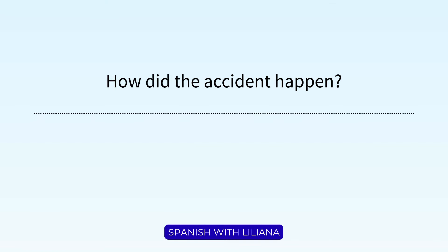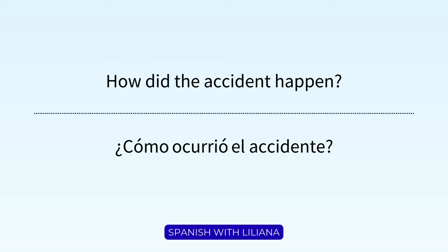How would we ask 'how did the accident happen?' 'How' is 'cómo.' In English we have a helping verb and then the subject, but in Spanish we go straight to the main verb 'ocurrió,' because there's no helping verb. 'The accident' is 'el accidente.' So: '¿Cómo ocurrió el accidente?'